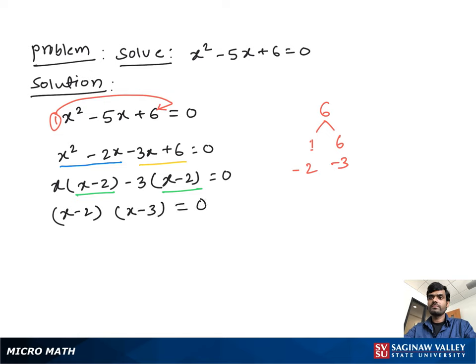Now both terms multiply to give us 0. So what to do? We set each term equal to 0 to find the value of x. So we set x minus 2 equal to 0, or x minus 3 equal to 0.